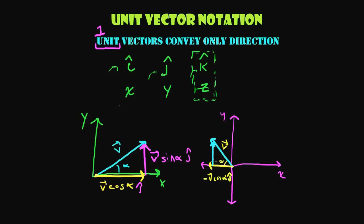The y-component is v sine alpha j-hat, and the j-hat is simply telling you it's in the y direction. That's all it does. Remember, these are unit vectors — multiplying by one doesn't change the magnitude, it only conveys direction.